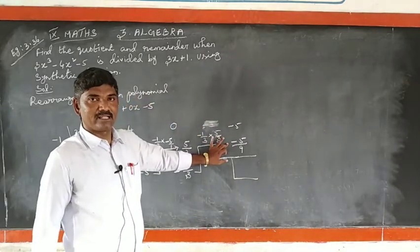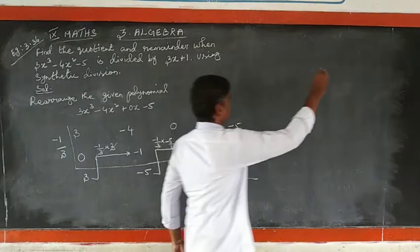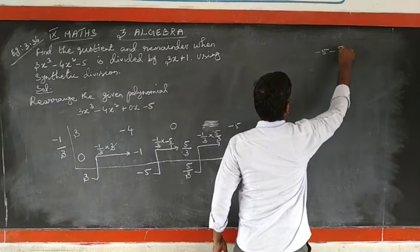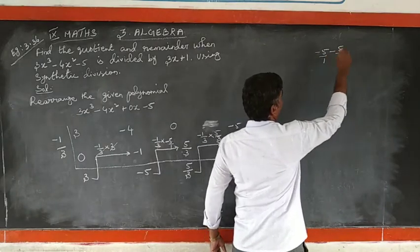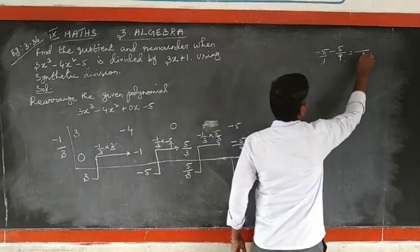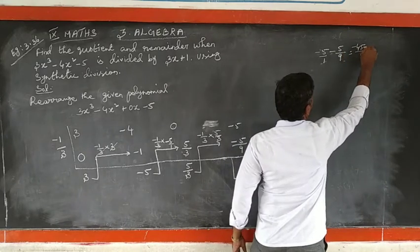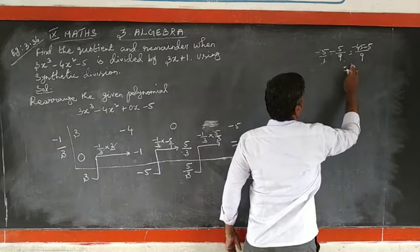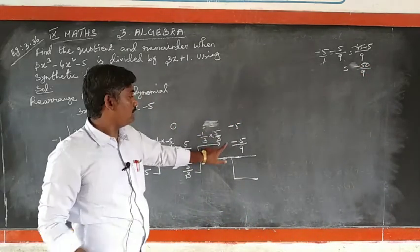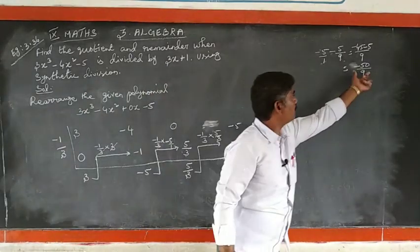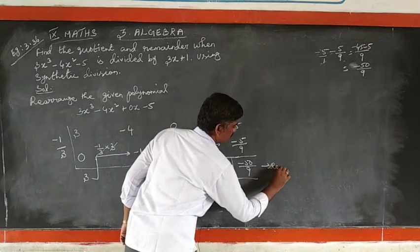Now we write the remainder. The last value is minus 5 by 9. To confirm: 1 times 9 is 9, cross 1; 5 times 9 is 45, so minus 45; 1 times 5 is 5, so minus 5. That equals minus 50. So the remainder is minus 50 by 9. This is the reminder.